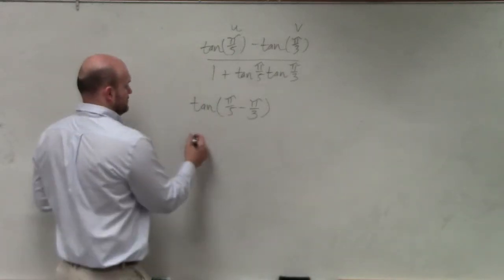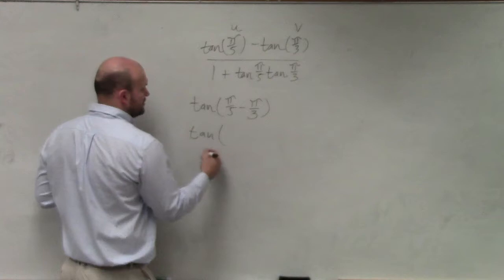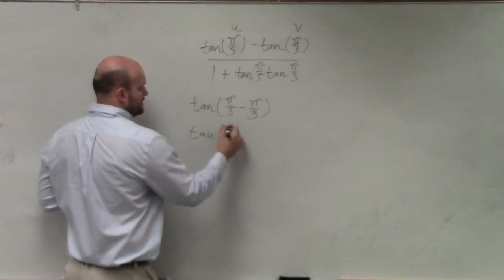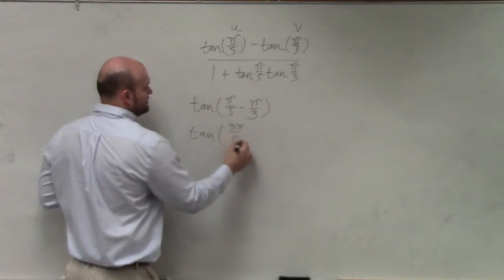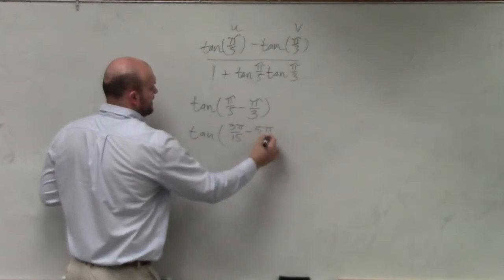Obviously, you could also combine them. So that'd be, let's see, 3 pi over 15 minus 5 pi.